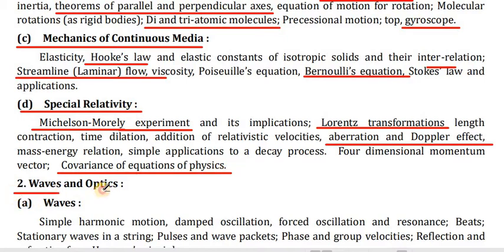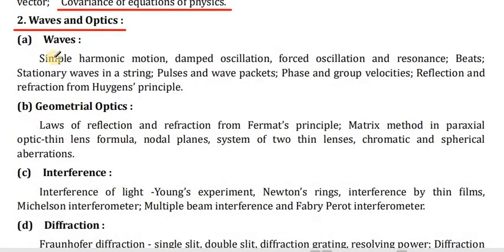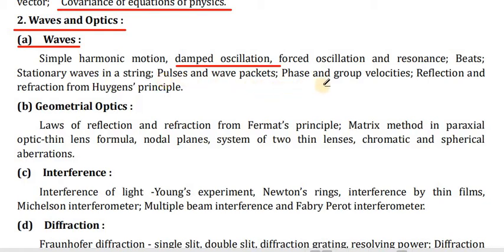Point 2: Waves and Optics. Section A — Waves: simple harmonic motion, damped oscillations, forced oscillations and resonance, beats, stationary waves in a string, pulse and wave packets, phase and group velocities, reflections and refraction from Huygens' principle.